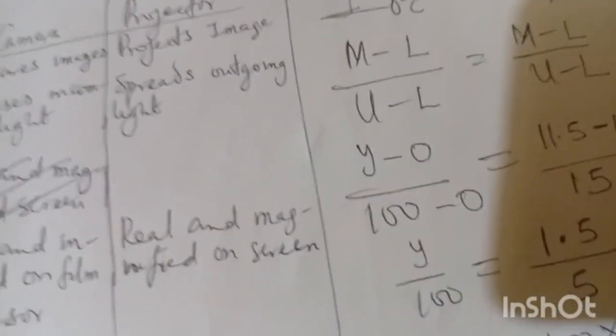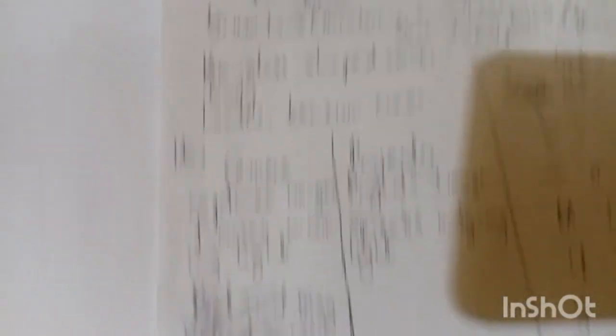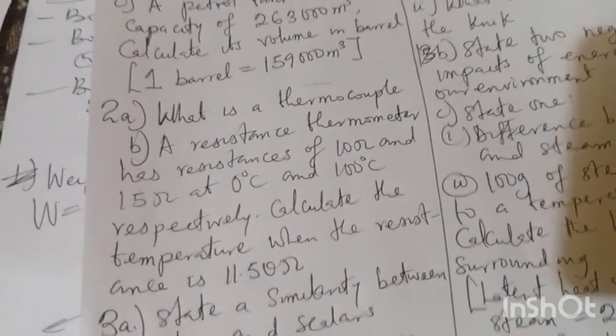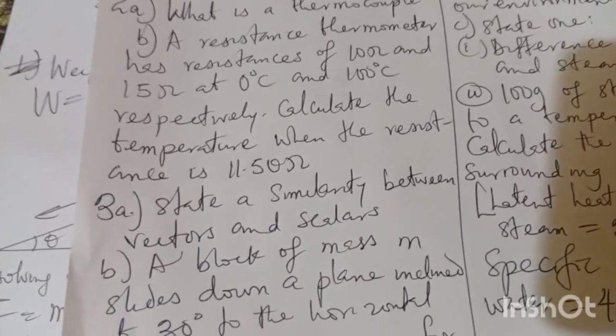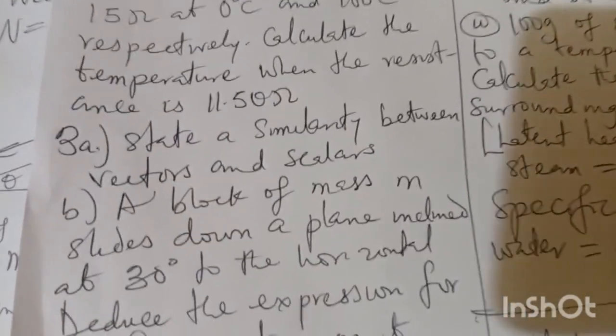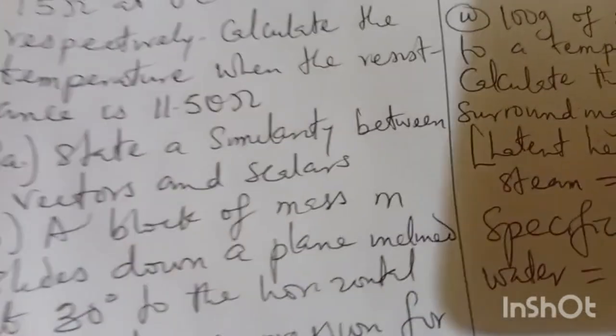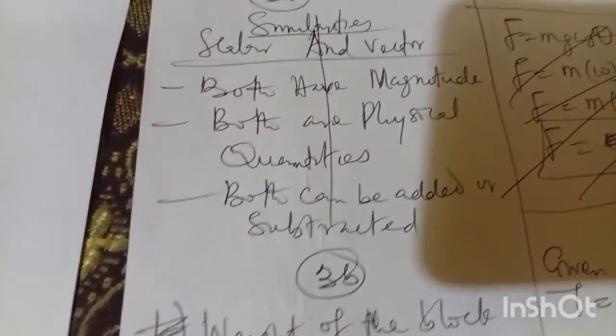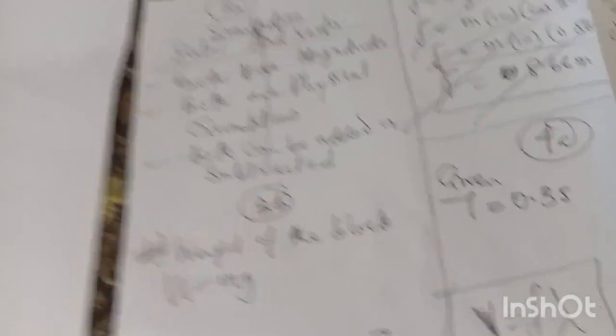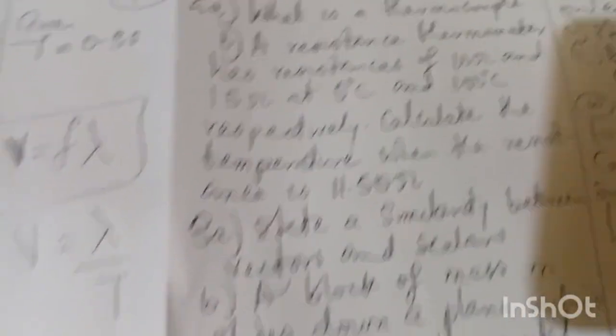I'm going to question number three. The question says similarities between vectors and scalars. We can talk about the similarities between vectors and scalars saying that both of them are physical quantities, both of them have magnitude. Let me show you what I wrote: both have magnitude, both are physical quantities, both can be added and subtracted.